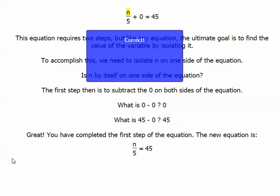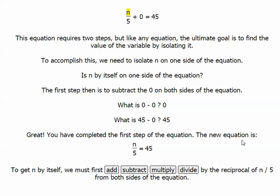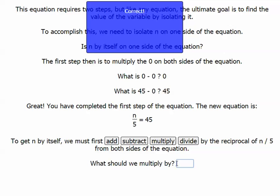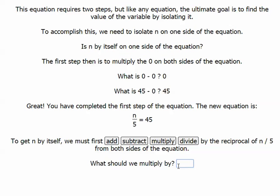And it says great, you have completed the first step of the equation, and the new equation is n over 5 equals 45. So I'm going to start over again. To get n by itself, we must first add, subtract, multiply, divide by the reciprocal of n over 5 from both sides of the equation. So I have to multiply, I have to multiply by 5, because the reciprocal of n over 5 is actually 5 or 5 over 1.